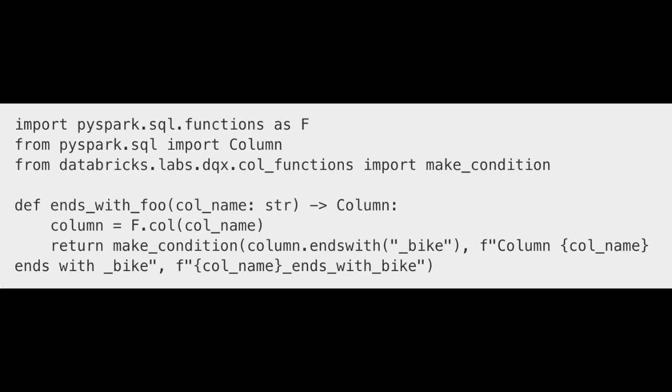You can also use plain Python — almost like a UDF — to define your own check. I'm importing from `databricks.labs.dqx.col_functions` the `make_condition` function and basically making my own condition saying a certain column has to end with 'bike'. You could do whatever you want, write your own Python check for whatever you need.